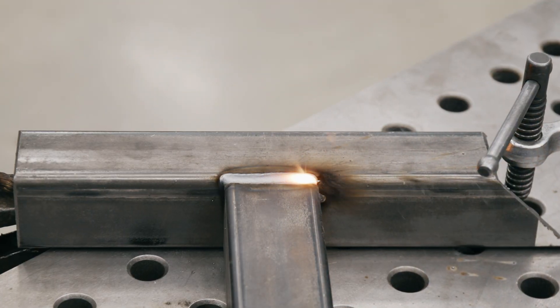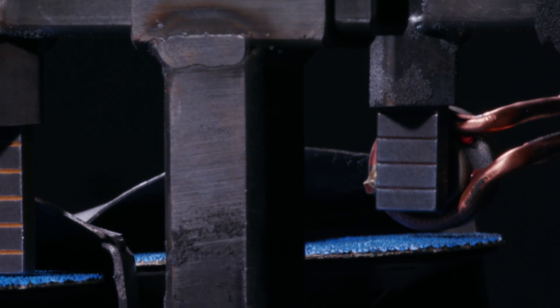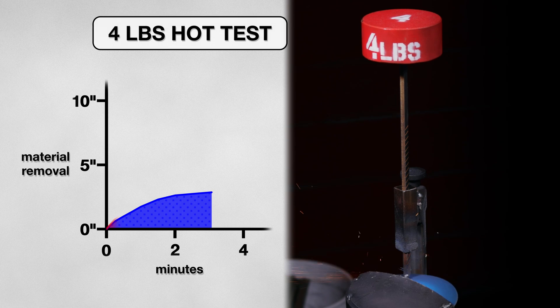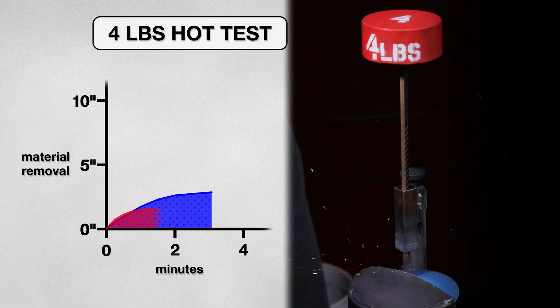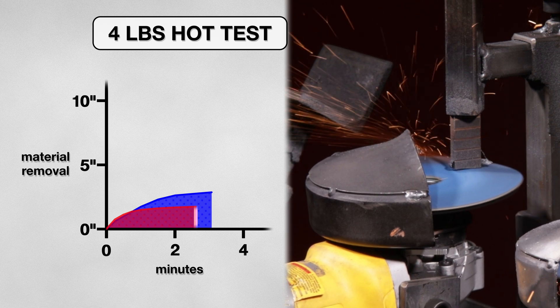So I decided to test a real world scenario, grinding on a hot weld. To do this, I preheated the first couple inches of a test bar. This will simulate the disk's contact with a hot weld. Once the test got started, I was hopeful this was going to give me the results I wanted. But this time, the performance actually fell off much earlier and cut an inch less of material.